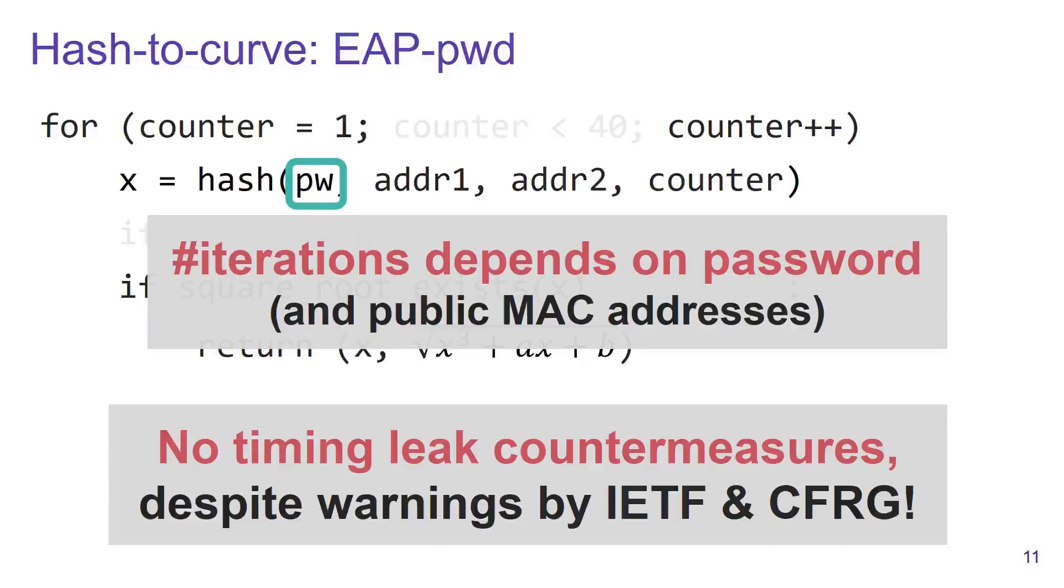Unfortunately, the designers discarded these side channels because they thought they were theoretical and that they would not leak the password of the network. Unfortunately, this side channel does allow an adversary to perform an offline dictionary attack. So how can we recover the password based on the number of iterations that are executed?